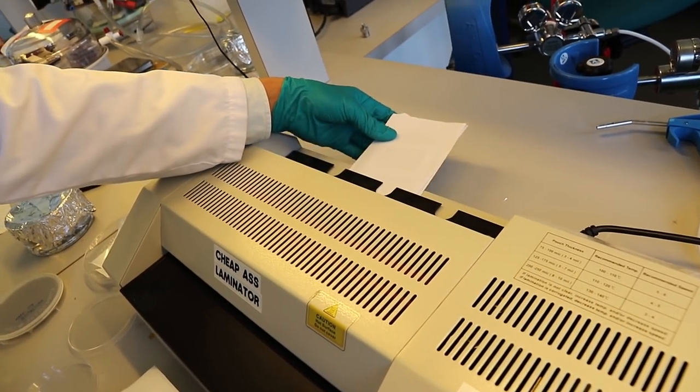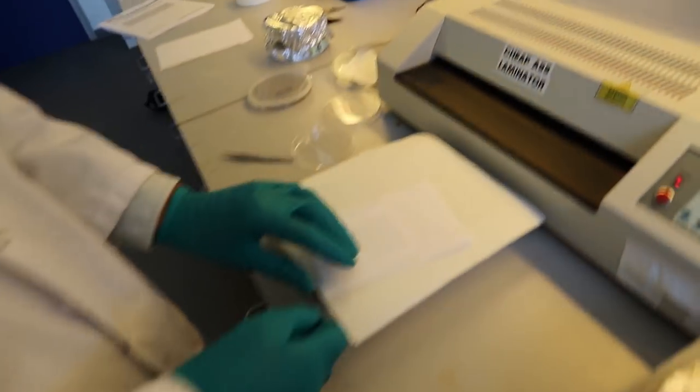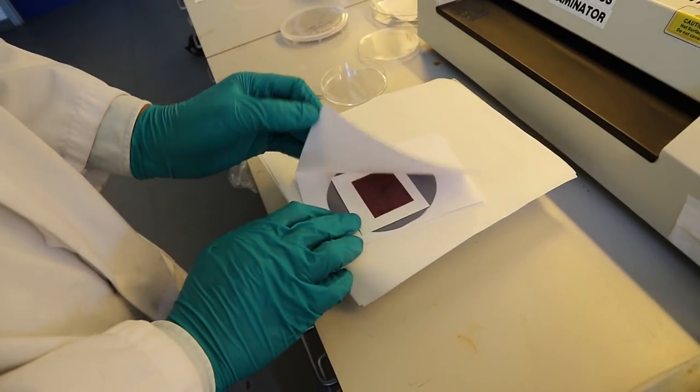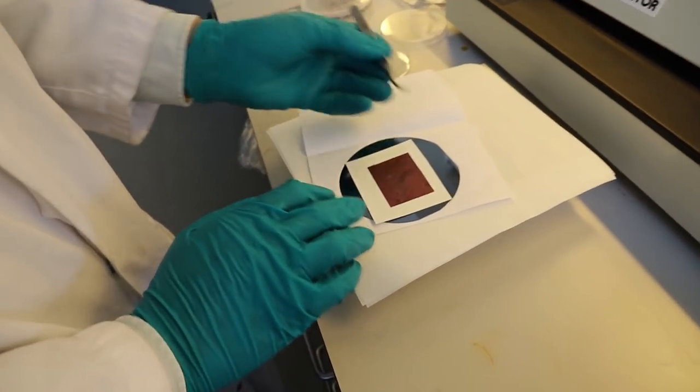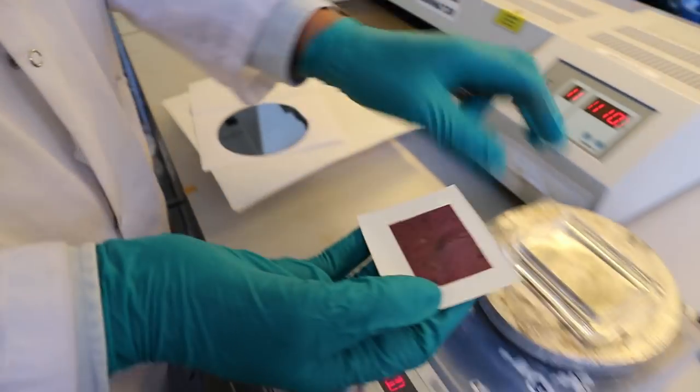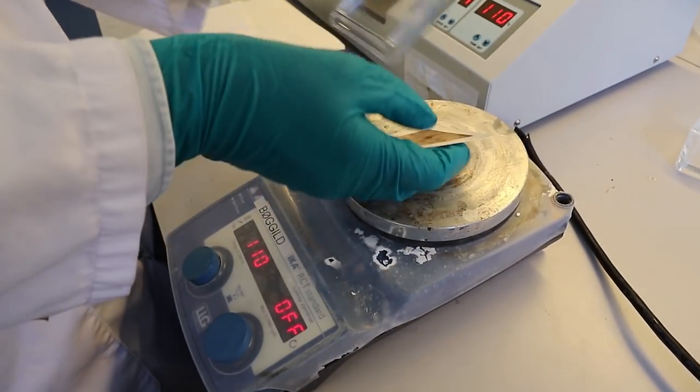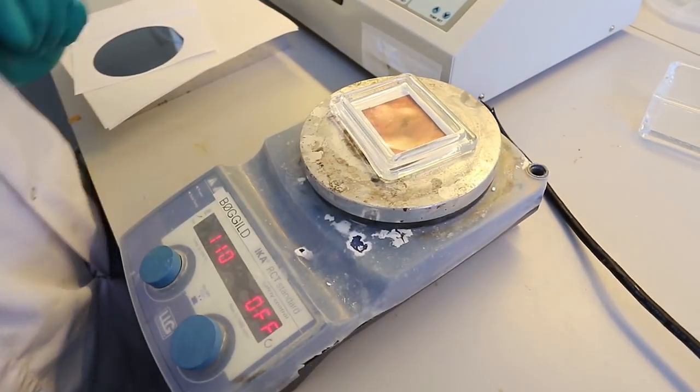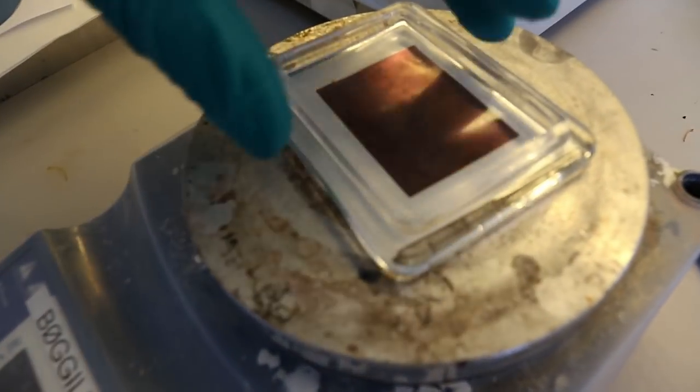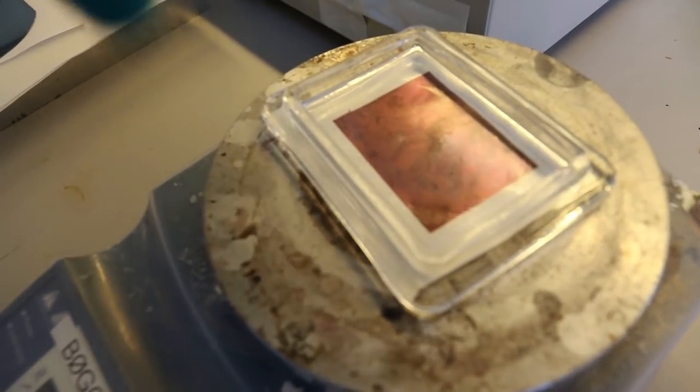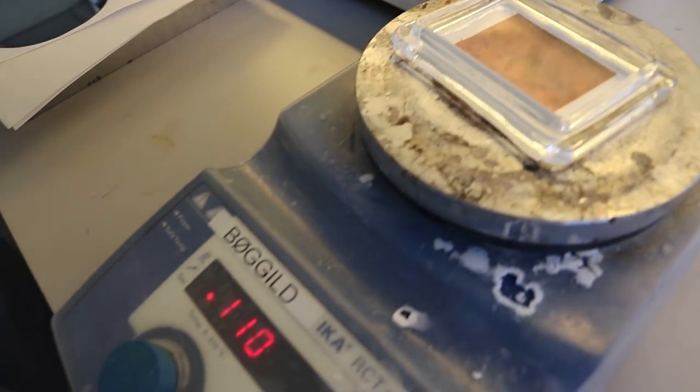Now we want to make sure that the copper is sticking properly to the PVA foil. So what we do is give it a little more bake on top of a hot plate which is at 110 degrees Celsius. We use this glass slide to push down the foil while it's getting heated.